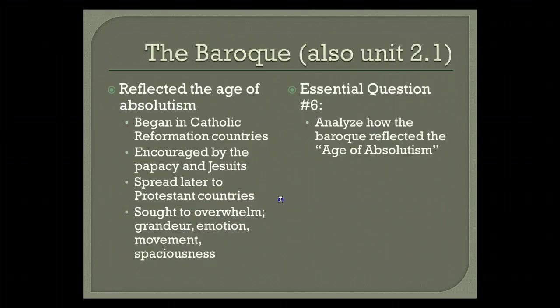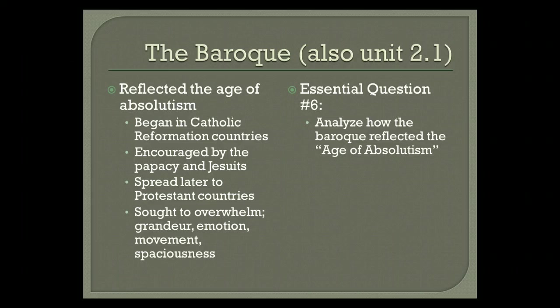The Baroque era. Essential question number six: analyze how the Baroque reflected the age of absolutism. The Baroque era reflected the age of absolutism as it began in the Catholic Reformation countries. During the 1600s, Catholic popes financed magnificent cathedrals and grand works to display their faith's triumph after the Counter-Reformation and to attract new worshipers by overwhelming them with theatrical, must-see architecture and art.